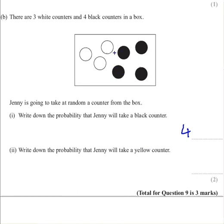This is 4 out of 1, 2, 3, 7. There's 7 counters in total. This is the only way to get the answer for this. You can't do it as a percentage. So you must have 4 black counters over 7, the total number of counters at the bottom.